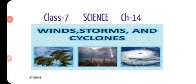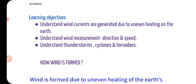Hello students, this video is for Class 7 Science and this is the second video of Chapter 14. The name of the chapter is Winds, Storms and Cyclones. In the first part we studied about air, composition of air, how wind is formed, and different characteristics of air. In this video we are going to study wind currents generated due to uneven heating on the earth, wind measurement, thunderstorms, cyclones and tornadoes.